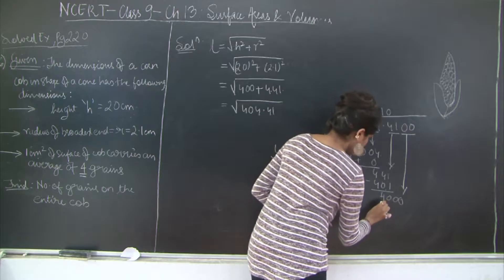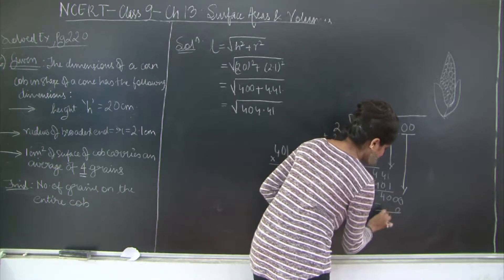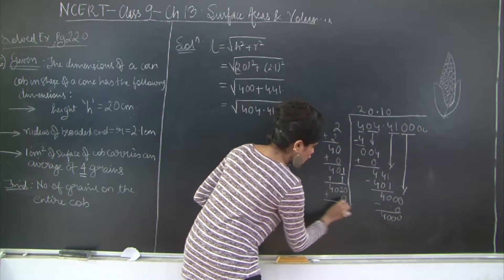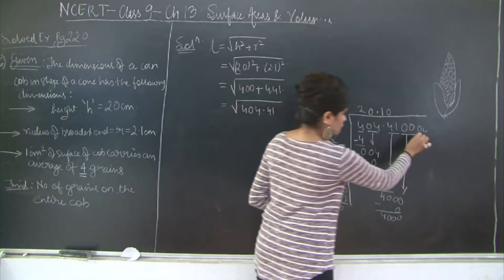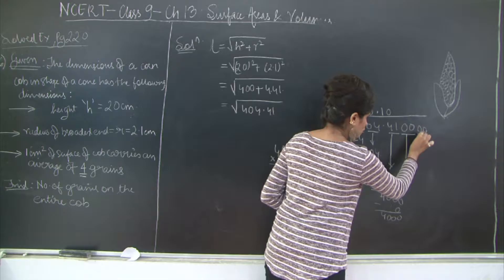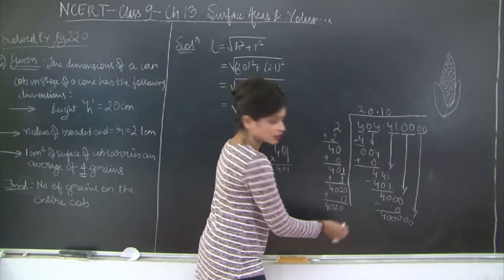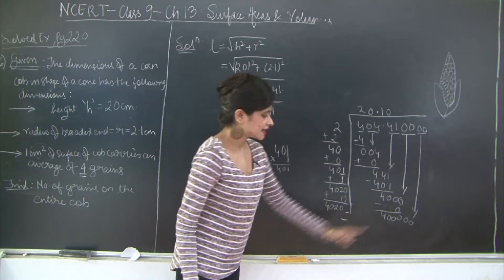4020 minus I get 4000 as it is. I am going to add another pair of 0, but before that let's add a 0 over here. I get 4020. Now I am going to bring down this pair of 0s.